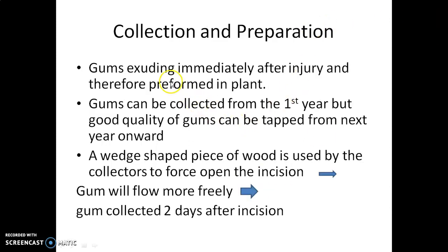Regarding collection and preparation: the gum exudes immediately after injury because it is already preformed in the plant. Unlike Acacia, where injury induces gum exudation after a certain period of time, Tragacanth gum is already prepared. Gums can be collected from the first year, but preferred quality gum is tapped from the second year onwards.